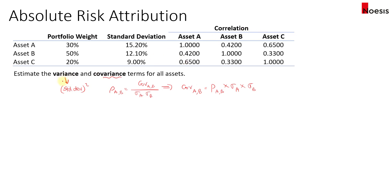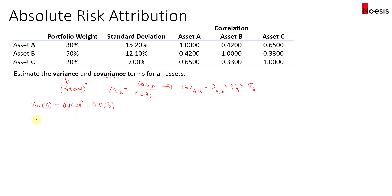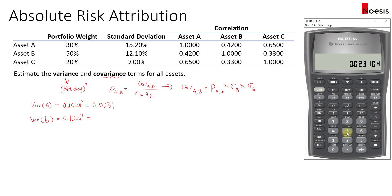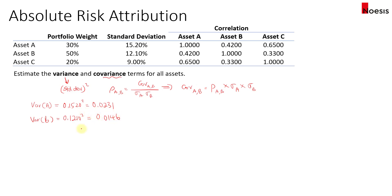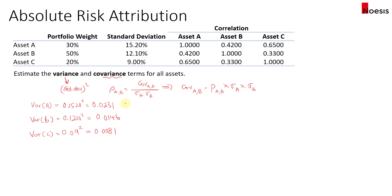So we start off with the variance. I'll convert to decimal — I usually do the workings in decimal instead of in percentage. So the variance for A will be 0.152 squared, that's 0.0231. Then the variance for B would be 0.121 squared, so that's 0.0146. Then lastly, for the variance of C, that would be 0.09 squared, so that's 0.0081. So that's the variance for A, B, and C.